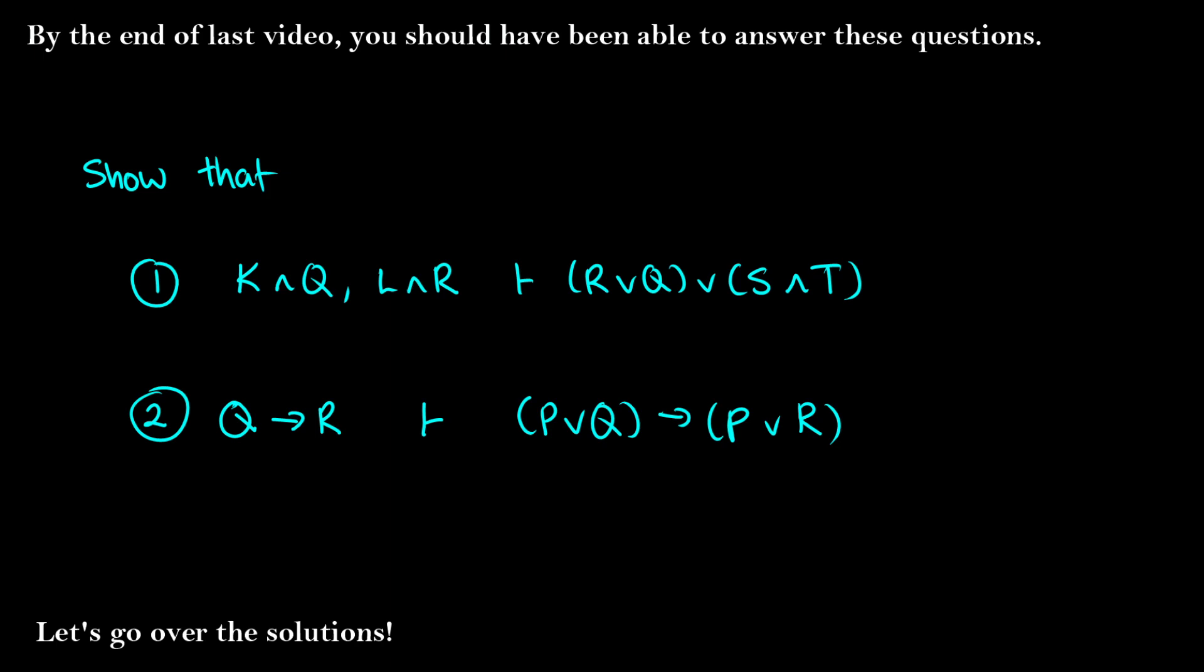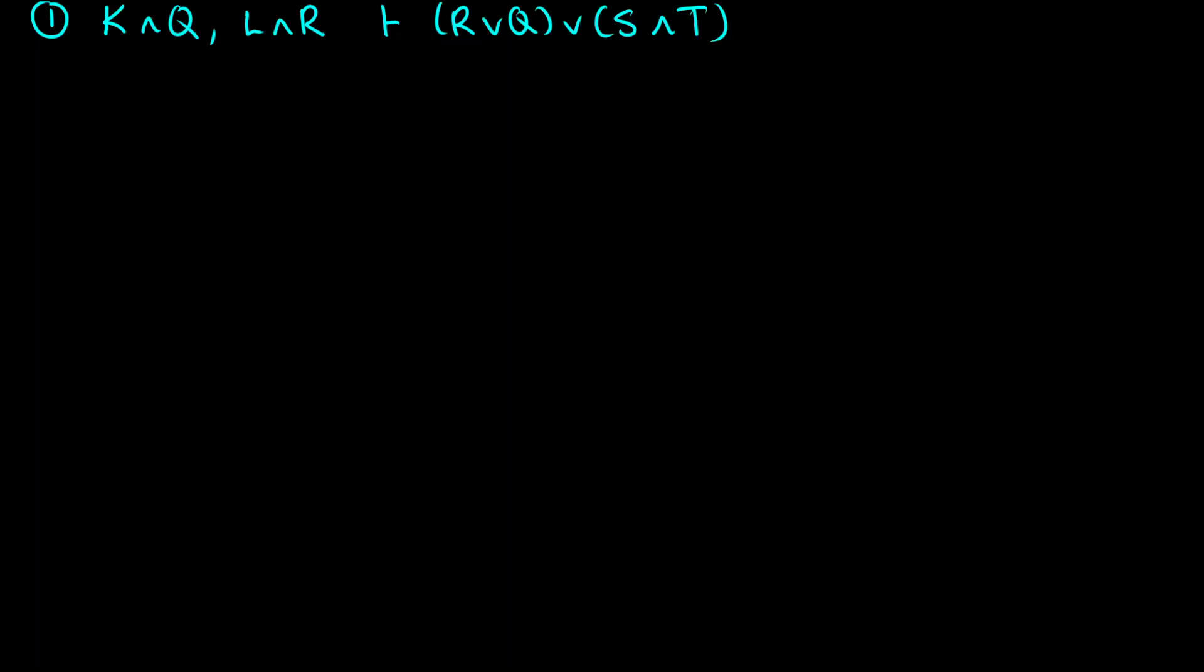And of course, I hope that you succeed learning from these. So the first proof, K and Q, L and R gives us R or Q or S and T. S and T, how are we getting S and T? Those aren't even in our assumptions. Well, we have a rule for that. So let's see how this pans out.